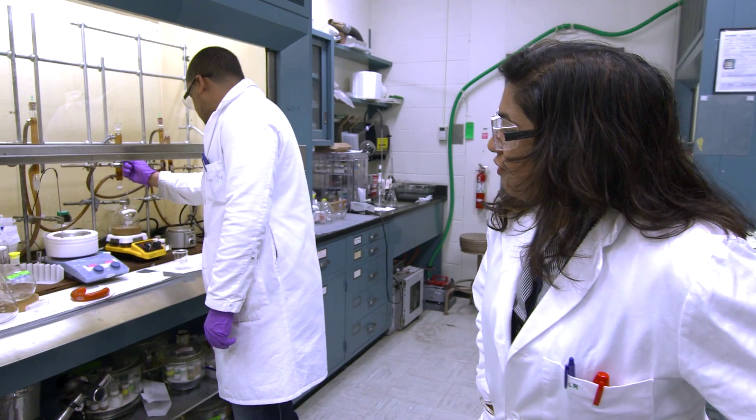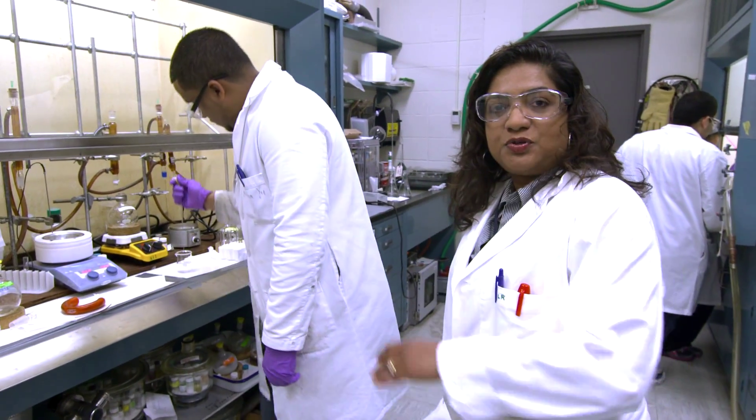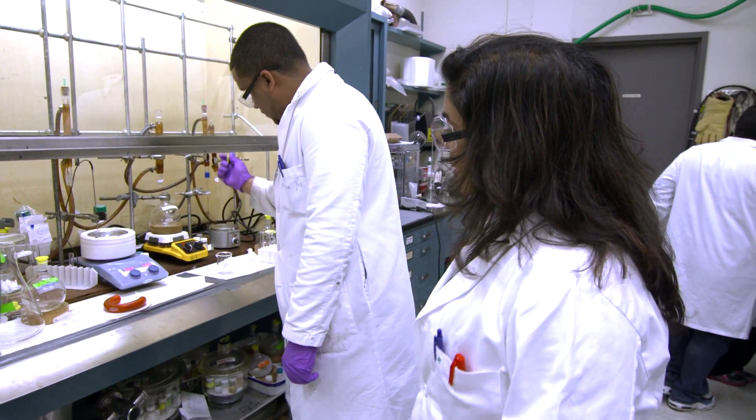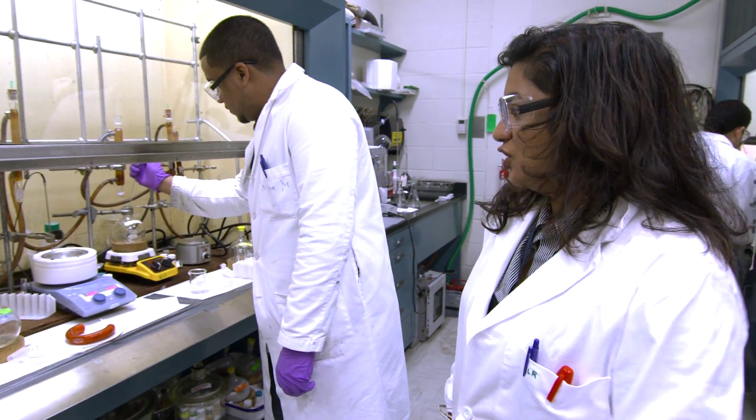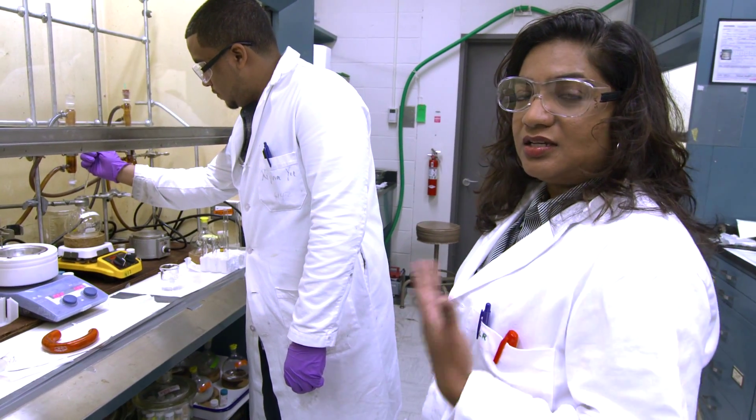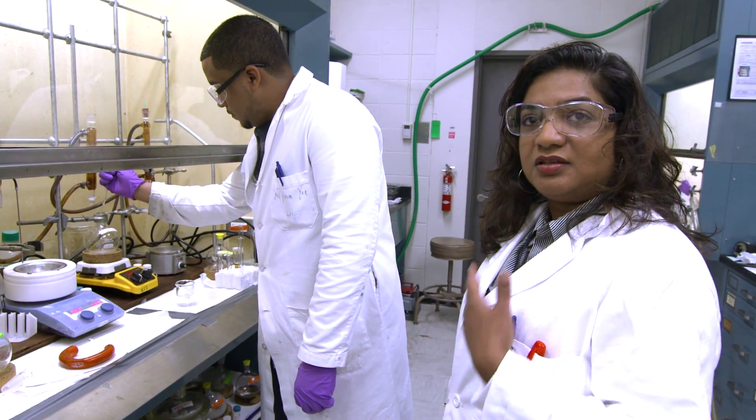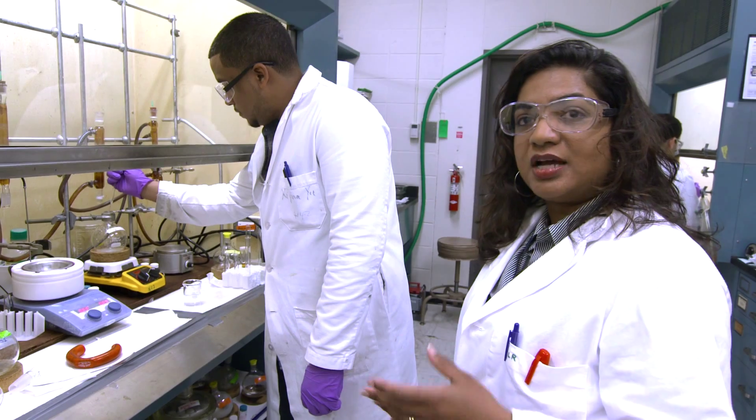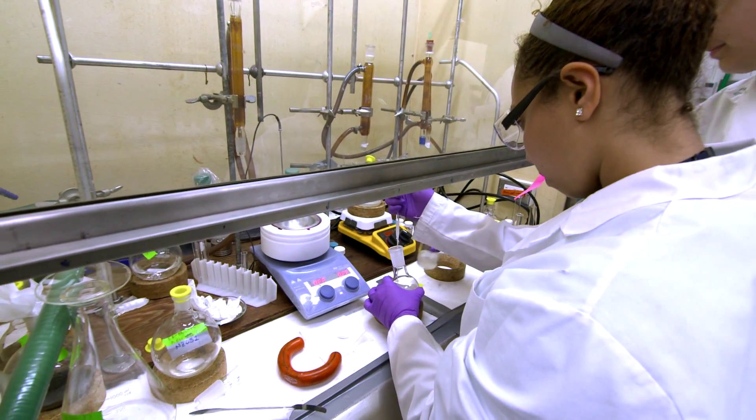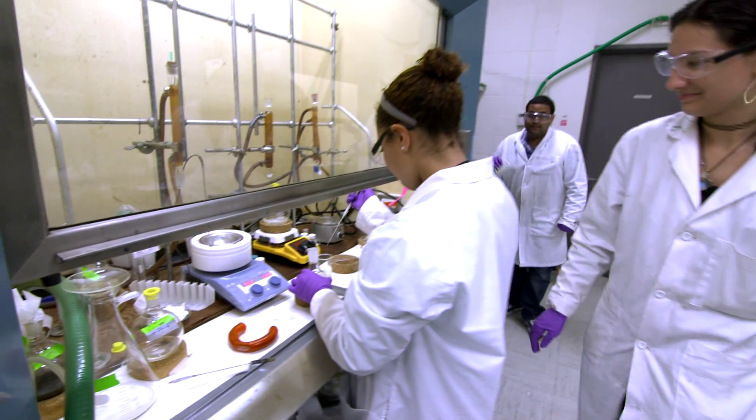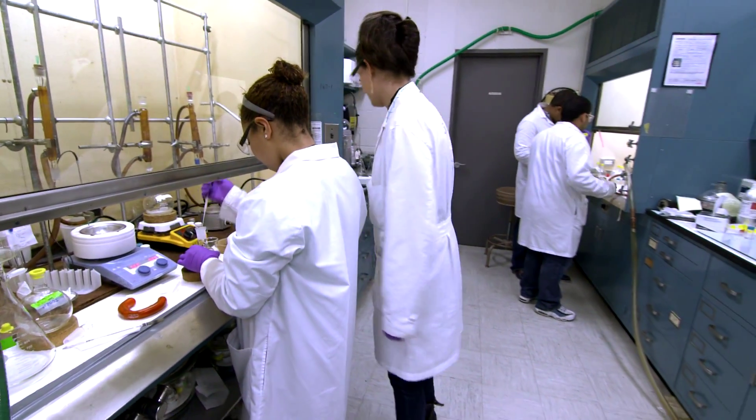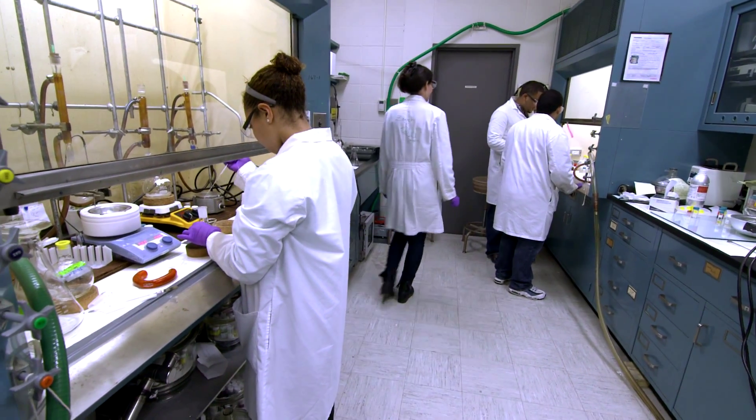My student is preparing an ionic liquid. This particular one is a two-step process. So he's just exchanging one of the ions and when he does that he can change the compound from being a solid that's high melting to actually a liquid at room temperature. And through the support of the various programs I've been able to mentor over two dozen students and expose them to research at a national lab.